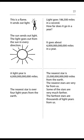Page 77. This is a flame. It sends out light. The sun sends out light. The light goes out from the sun in every direction. Light goes 186,300 miles in a second. How far does it go in a year? It goes about 6 trillion miles in a year. A light year is 6 trillion miles. The nearest star is over 4 light years from the earth. The nearest star is 25 trillion miles from the earth. The nearest stars are very far from us. Some of the stars are very much farther. The farthest stars are thousands of light years from us.